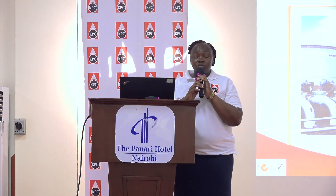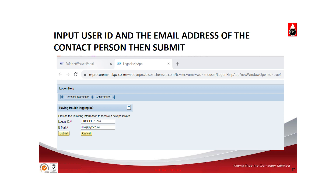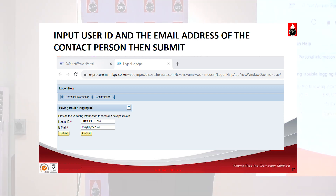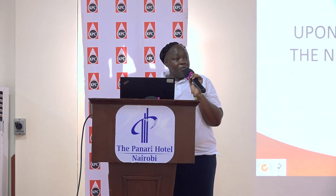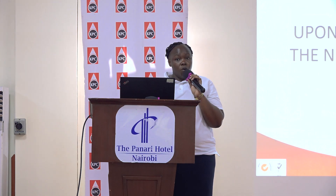For you to change your password, on the e-procurement portal, do not enter any information — do not enter your user ID, do not enter your password. Go straight to get support. A page will pop up where you will be required to enter your login ID, which is the user ID. Enter the user ID that was sent to you, and then under email address, enter the email address that was entered for the contact person. Then click on submit. You will receive a new password immediately. When the system requires an old password, enter the current password that has been sent, and then you will be able to reset to your own password.